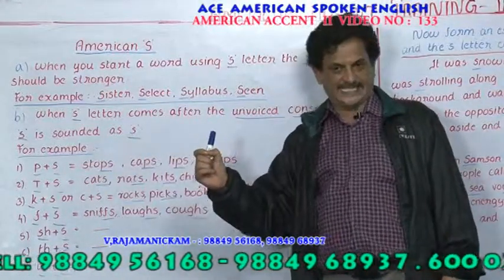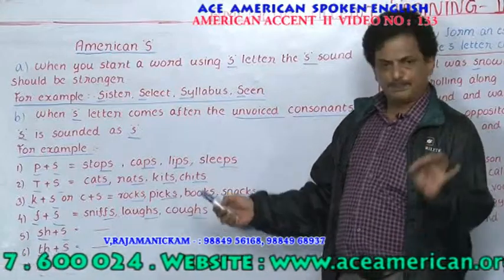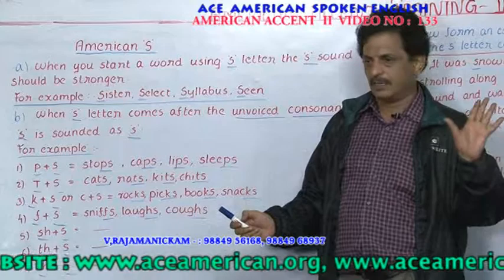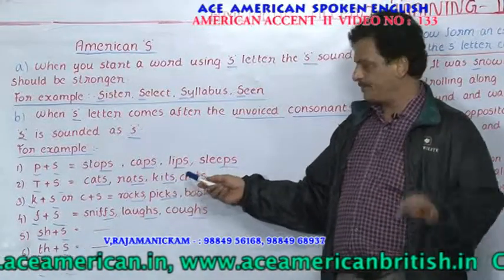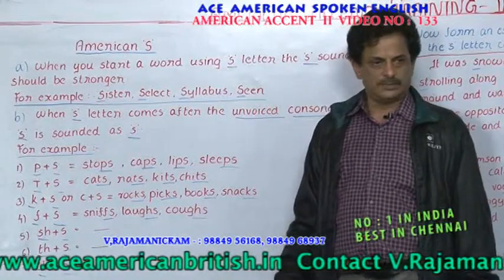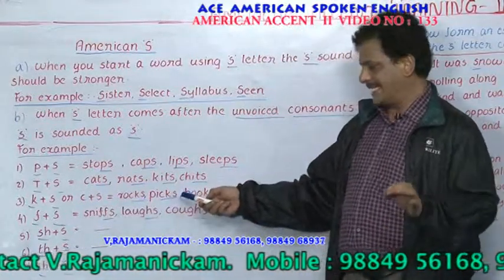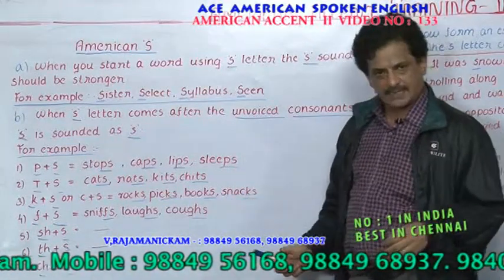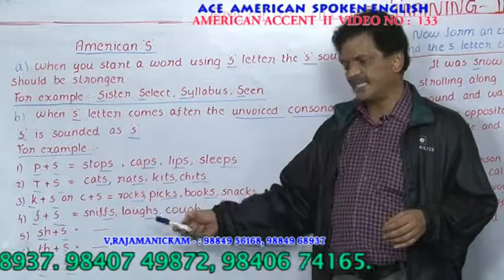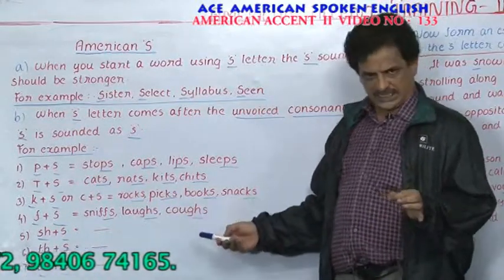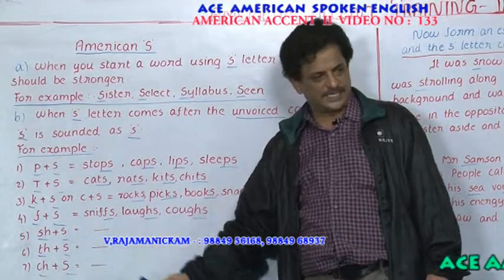After unvoiced consonants, S stays as S. P plus S: stops, caps, lips, sleeps, limps. T plus S: sits, cats, rats, kids, chits. K plus S: rocks, picks, books, snacks. F plus S: sniffs, laughs. Note that GH words are pronounced as F. With TH or CH plus S, there are no common words.